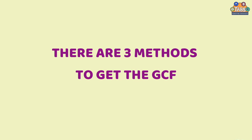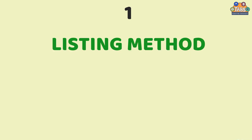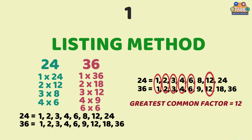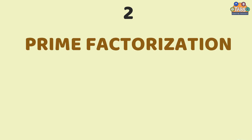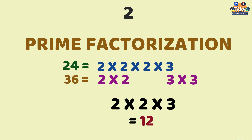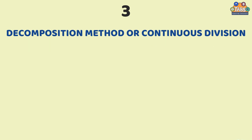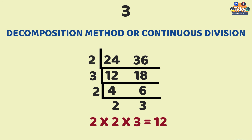Now, let us recap. There are three methods to get the GCF. The first method is the listing method — list all the factors of the numbers, then find the largest among the factors. The second method is prime factorization — list all the prime factors of the given numbers. The third method is the decomposition method or continuous division — divide the two given numbers by any common factor, continue dividing until they no longer have a common factor except one, then multiply all the divisors on the left to get the GCF.